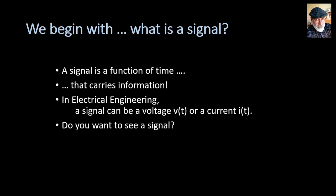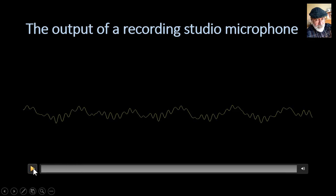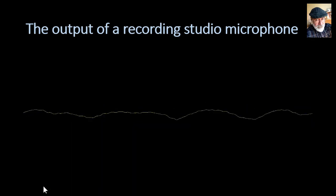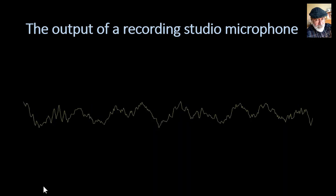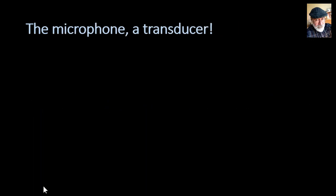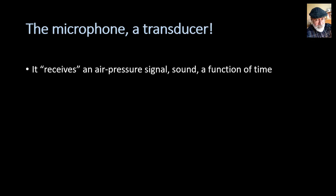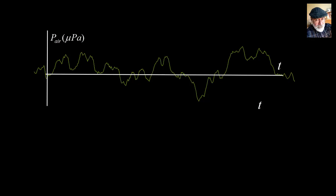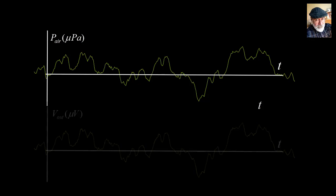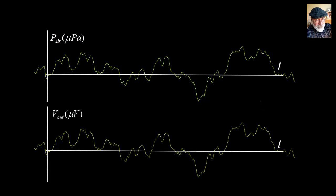Do you want to see a signal? This is a signal. Let's listen to it. That is the output of a recording studio microphone. It is a function of time, and it contains information — the music you are listening to in the background. The microphone translates the air pressure representing the music in the studio to this voltage that is a function of time. The microphone is a transducer. It receives an air pressure signal — sound, a function of time — and outputs an analog voltage signal, which is exactly the same function of time. That is the air pressure in micropascals as a function of time, transduced by the microphone into this output voltage in microvolts. It is exactly the same function and contains the same information.